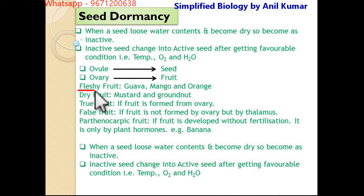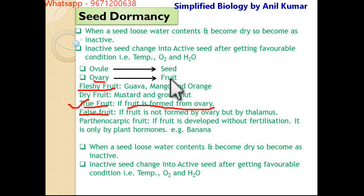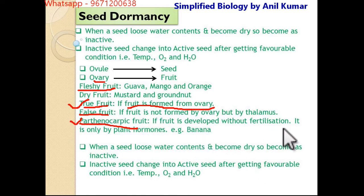Fleshy fruits include mango, orange, and guava. Dry fruits like mustard and groundnut are hard in nature. The definition of a true fruit is very important: if a fruit is formed from the ovary alone, it is a true fruit. If it is formed by any other part — especially the thalamus — that is a false fruit. In parthenocarpy, another important term, the fruit is developed without fertilization, mostly induced by phytohormones, like in the banana.